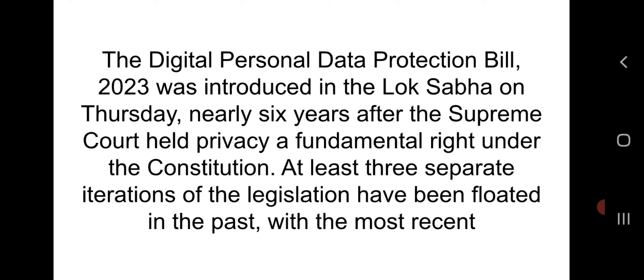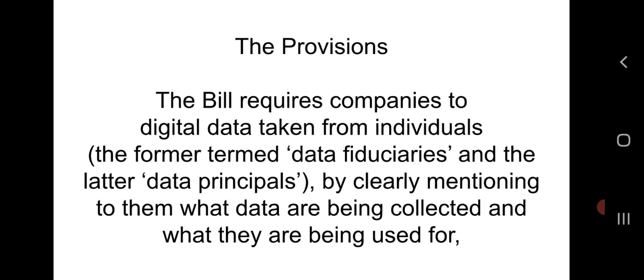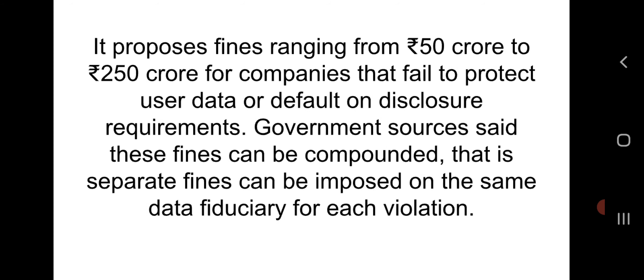The provisions: the bill requires companies — termed 'data fiduciaries' — to get digital consent from individuals — termed 'data principals' — by clearly mentioning what data are being collected and what they are being used for, appointing a data protection officer and giving contact information, and giving users the right to delete or modify their personal data. It proposes fines ranging from ₹50 crore to ₹250 crore for companies that fail to protect user data or default on disclosure requirements.